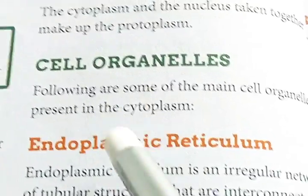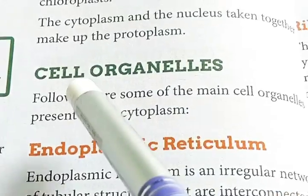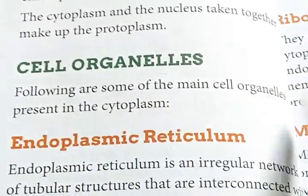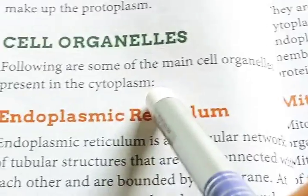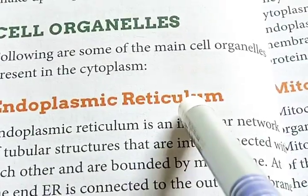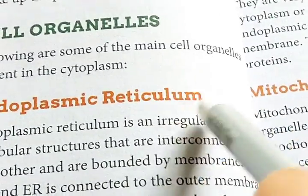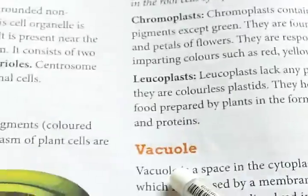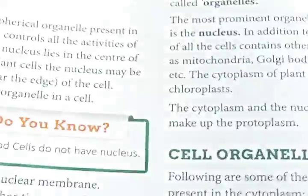Good morning students, welcome back to biology classroom once again. Today I am going to teach you cell organelles. The main cell organelles present in the cytoplasm include endoplasmic reticulum, ribosome, lysosome, mitochondria, Golgi body, centrosome, plastid, vacuole, etc. So let's start with the endoplasmic reticulum.